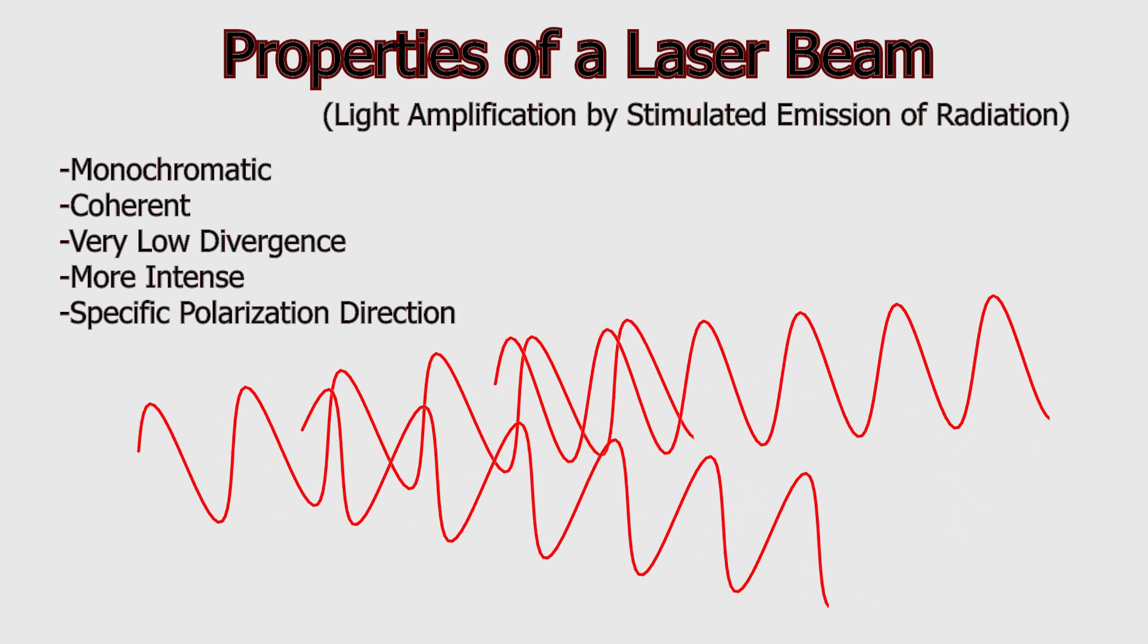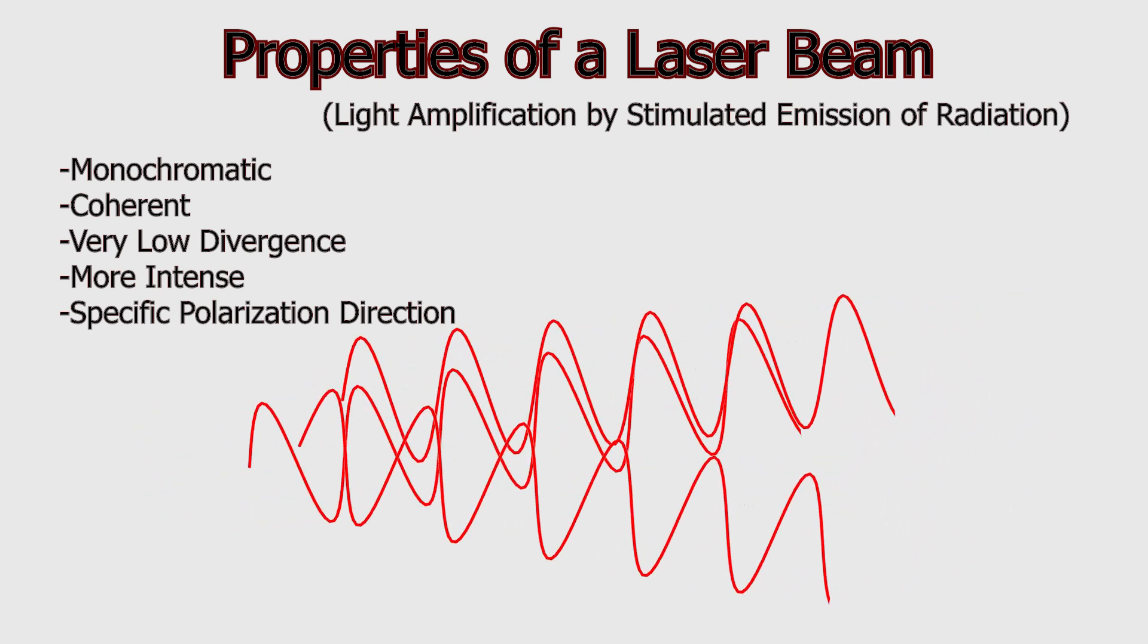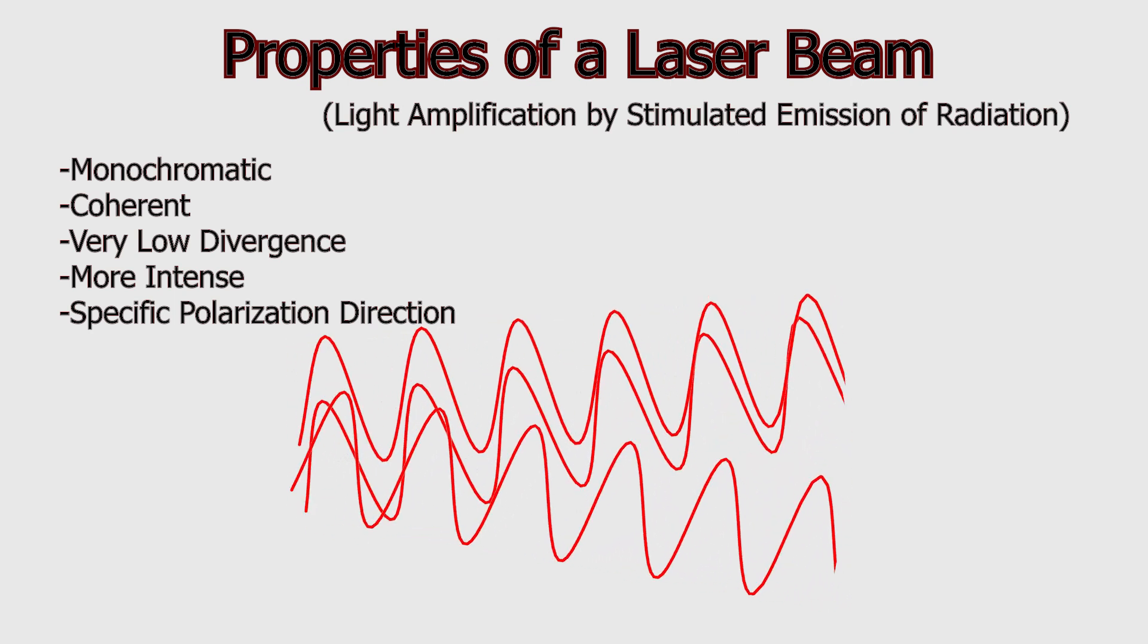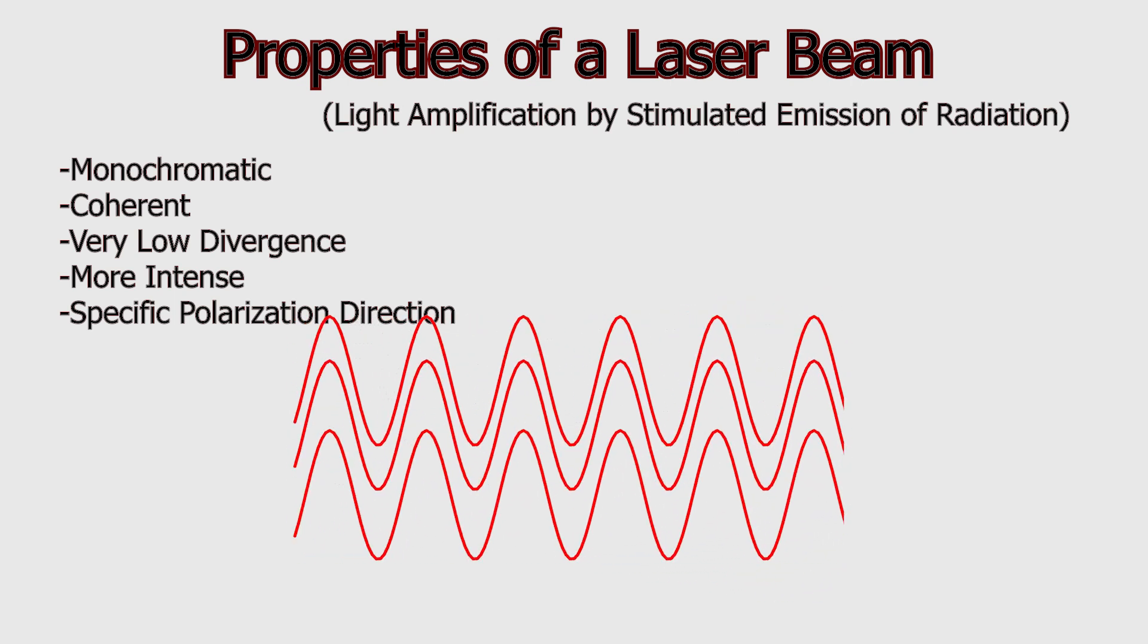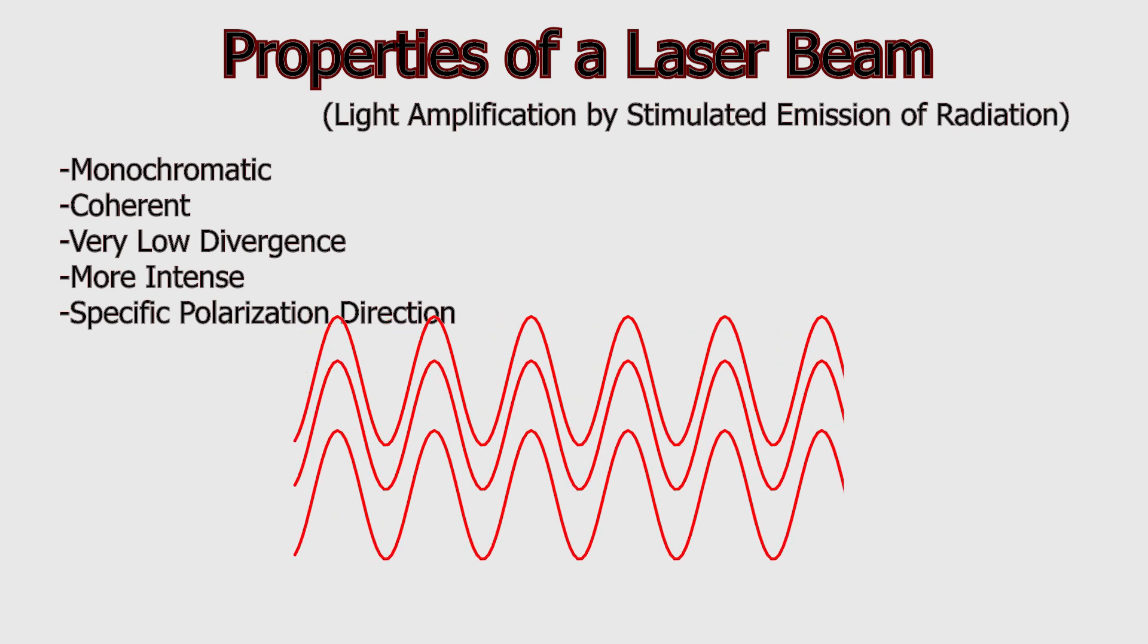A laser beam is also composed of coherent electromagnetic waves, meaning the spatial and temporal states of each electromagnetic wave are identical to one another. A laser beam has very low divergence, meaning it directs all its energy in a single direction. This allows it to travel long distances.